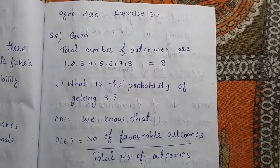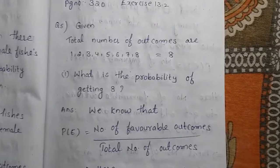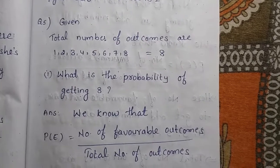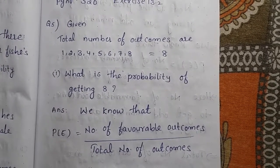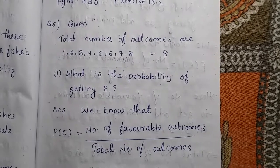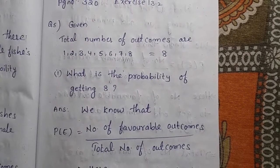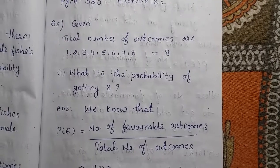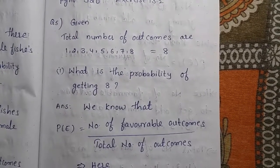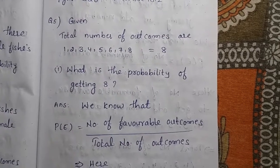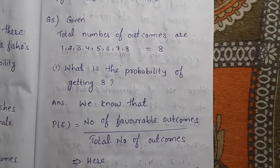Page number 320, exercise number 13.2. Given in the question, total number of outcomes are 1, 2, 3, 4, 5, 6, 7, 8 — so the total number of outcomes are 8. First question: what is the probability of getting 8? We know that the probability formula is number of favorable outcomes by total number of outcomes.